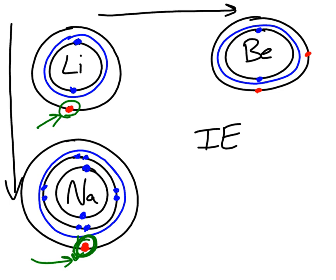Beryllium has more protons, which causes those electrons to want to be closer to the nucleus. The nuclear charge is stronger in beryllium than it is in lithium. That's why it's harder to remove beryllium's electrons — because they're closer to the nucleus.